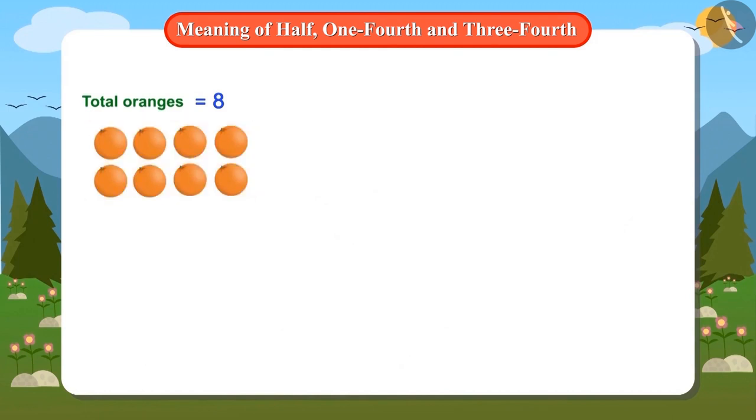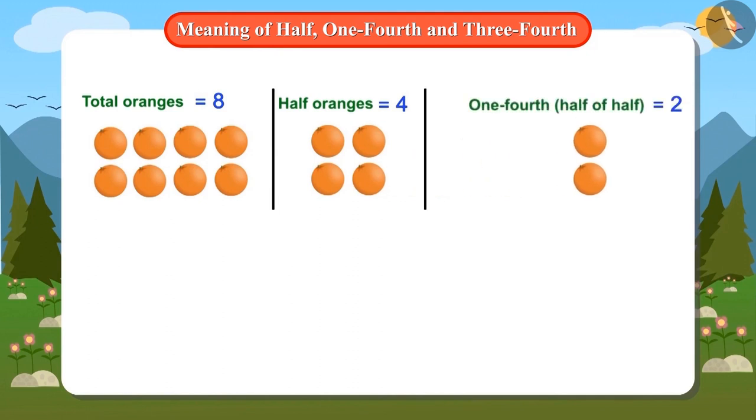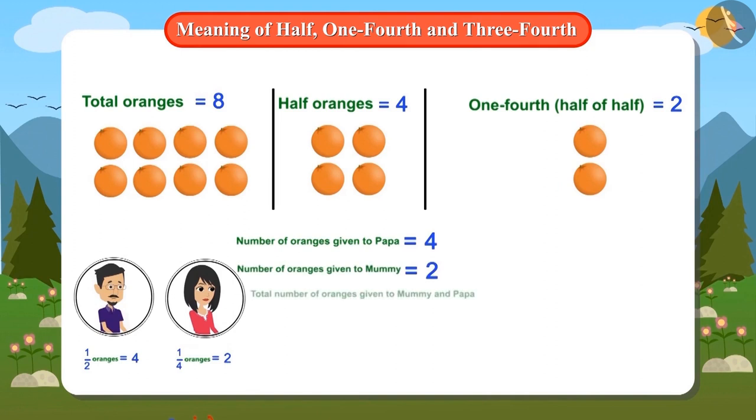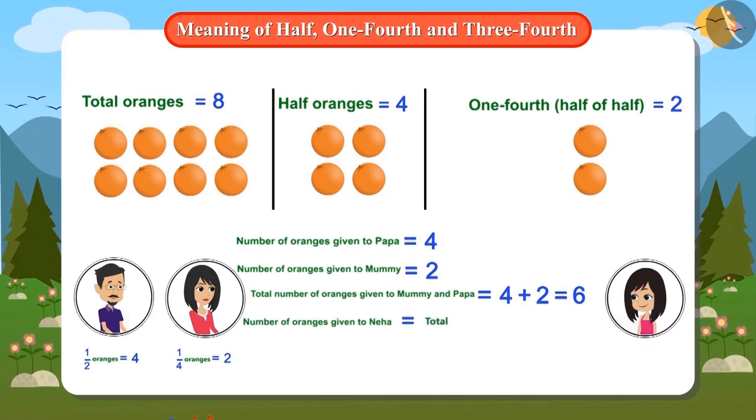We have a total of eight oranges. Half of them is four oranges, and one-fourth of half is to be calculated. Half of eight oranges is four, then half of four is two oranges. This means papa will get four oranges and mummy will get two oranges. Now let's add these two. The answer is six oranges. This means that six oranges will be given to Neha's mummy and papa, then how many oranges will Neha get? You are absolutely right, Neha will get two oranges.